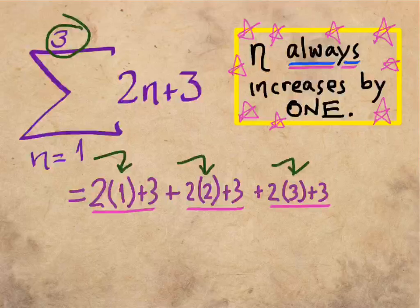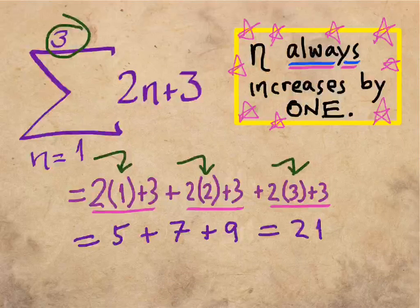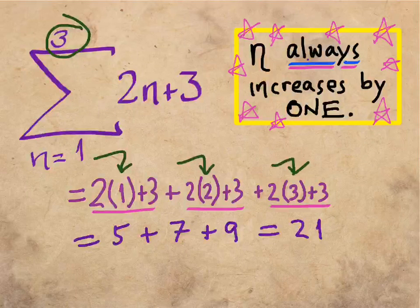I guess we should finish out the sum there. It's five plus seven plus nine equals 21. And that's it. So have fun with that.